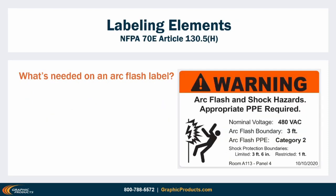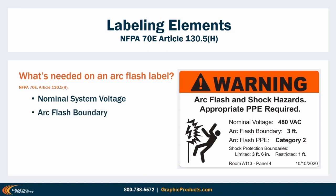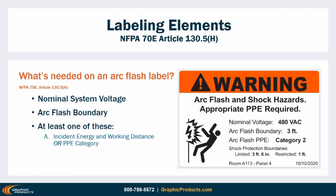Let's say you've collected your information and you're ready to move forward with creating labels. What details actually need to be on the finished label? The label requirements in NFPA 70E are listed in Article 130.5H, and they include: the nominal system voltage, the arc flash boundary, and at least one of the following — the incident energy and working distance, or the arc flash PPE category, but not both — the minimum arc rating of clothing, and/or a site-specific identification of required PPE.